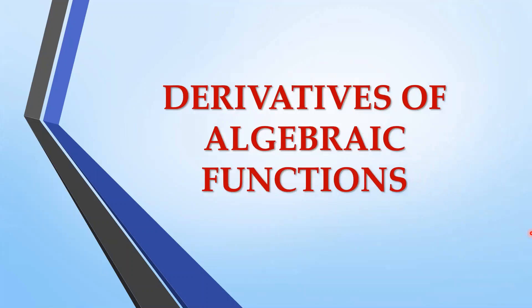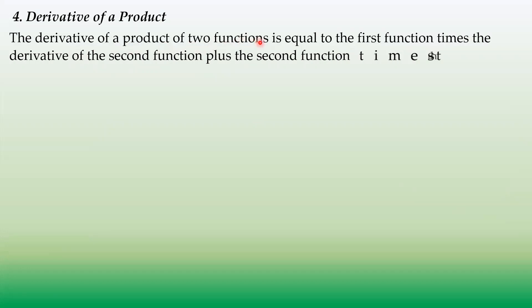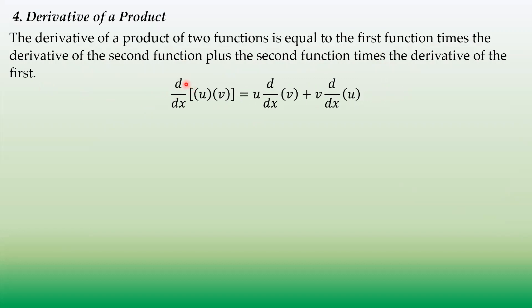Again, we have the derivatives of algebraic functions. So we have the derivative of a product. By definition, the derivative of a product of two functions is equal to the first function times the derivative of the second function, plus the second function times the derivative of the first function. Or the derivative of u times v is equal to u times the derivative of v, plus v times the derivative of u, where u and v are functions of x.